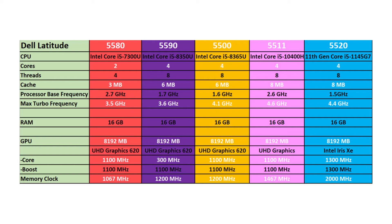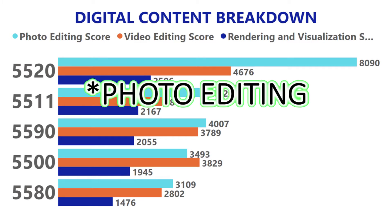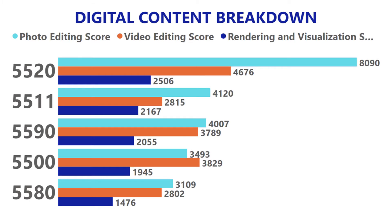Let's look at the breakdown of the digital content creation scores. The photo editing score of the 5520 is almost double that of the 5511. Looking at the video editing scores, it also has quite a lead on the 5511. The 5590 scores above the 5500 in terms of video editing, rendering, and visualization — I'm pretty sure that just has something to do with the driver.